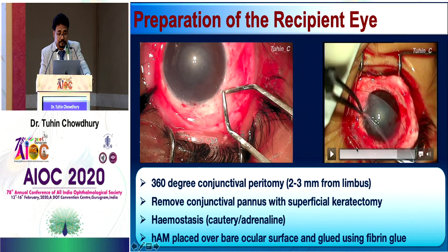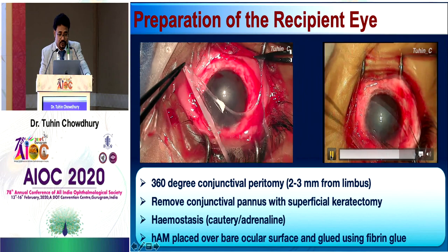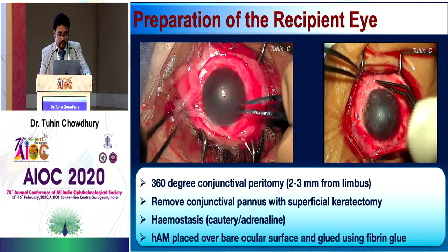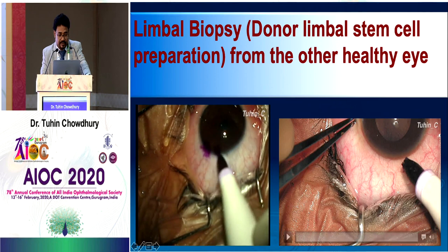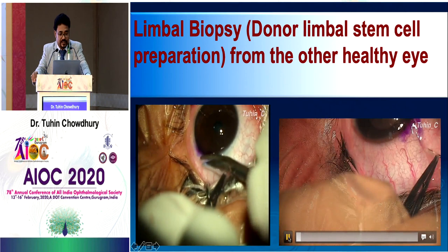Amniotic membrane is placed using a two-fold technique — first the inferior half then the superior half — and glued. For donor limbal stem cell preparation: SLET is an autologous procedure, so the fellow eye must be healthy. A bleb is created by injecting normal saline or BSS, then a limbal biopsy at least 1 mm inside the cornea is taken and preserved in BSS.